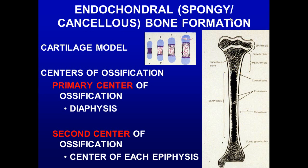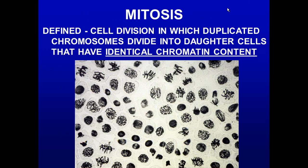Endochondral bone formation makes hard bone from what was cartilage. In long bones, we have different centers of ossification — a major primary center, and then secondary centers of ossification that also occur.